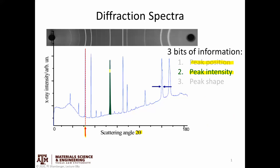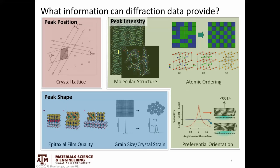Peak intensity is the total number of counts at the detector associated with a particular peak. Peak intensity can give you information about the contents within a unit cell — where individual atoms are, how atoms are arranged with respect to each other, which tells you something about molecular structure. It also tells you about atomic ordering and the microstructure: whether individual grains are randomly oriented or tend to be aligned in a particular direction.